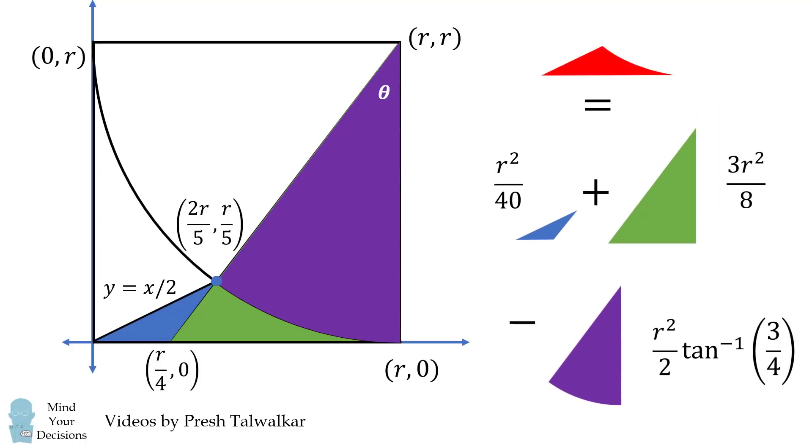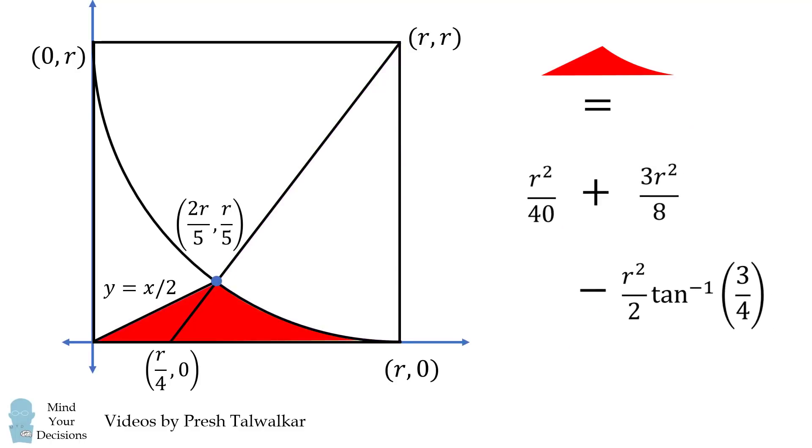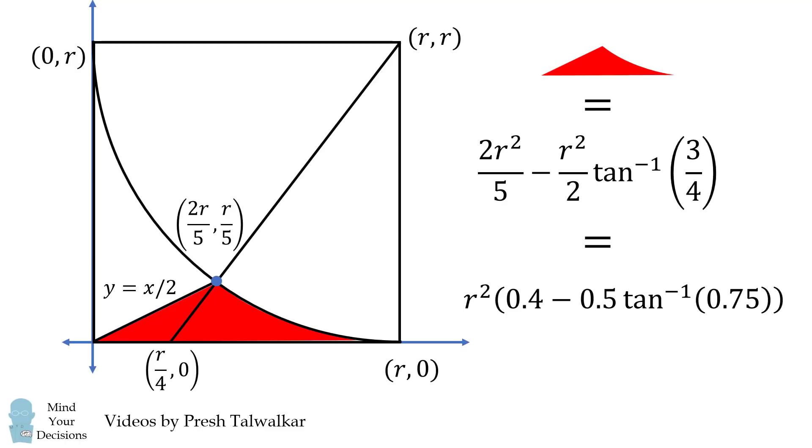So we now have a simple equation for the area of this red shape. It'll be the sum of the areas of these two triangles minus the area of this circular sector. We just need to work through a little bit of algebra and simplify, and we get a simple formula. It's 2R squared over 5 minus R squared over 2 times the inverse tangent of 3 fourths. It might be a little easier to put it in this form if you want to put it on a calculator. It'll be R squared multiplied by the quantity 0.4 minus 0.5 times the inverse tangent of 0.75.